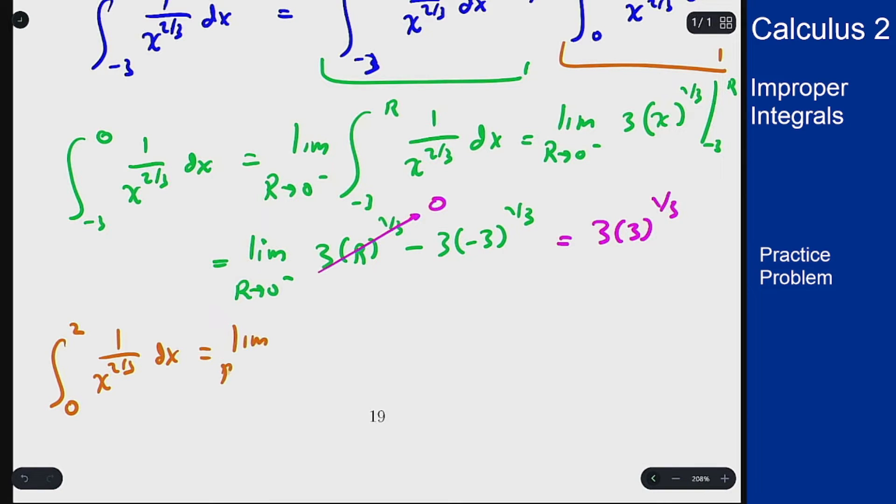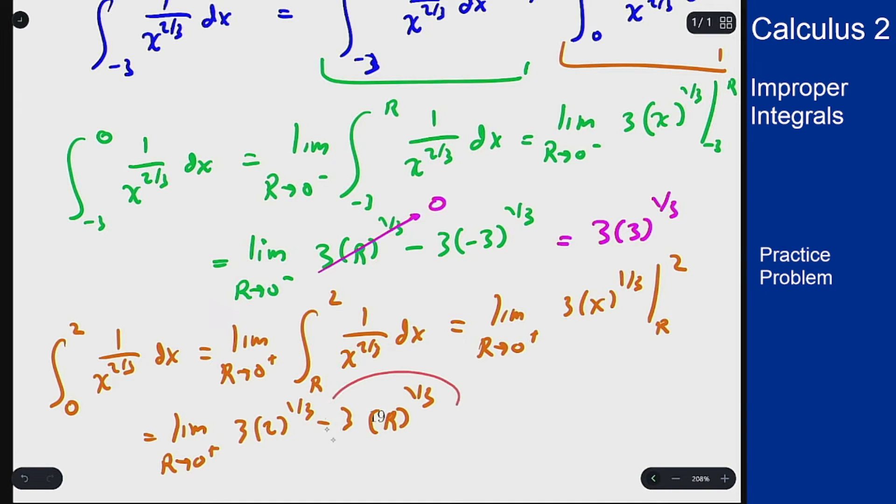So limit as r approaches 0 from the right this time of r up to 2. The anti-derivative here is the same, let me plug in our endpoints. As before when I send r to 0 this term will go to 0 and I'm left with just 3 times the cube root of 2.